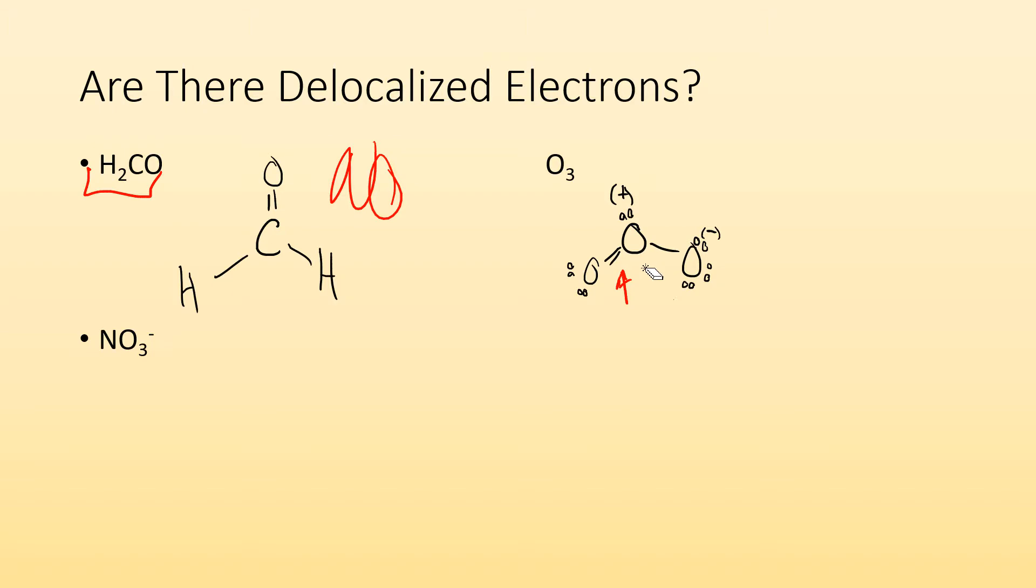The fact that I can ask this question tells me that there must be a resonance structure. These two resonance structures are equally good. So I got resonance structures. They involve pi bonds. I have delocalized electrons in this example.